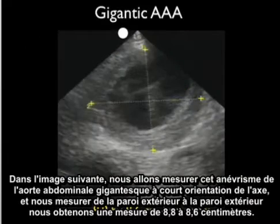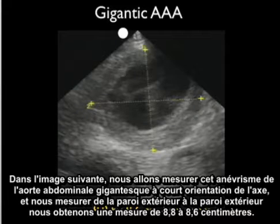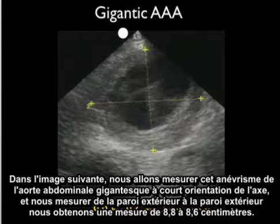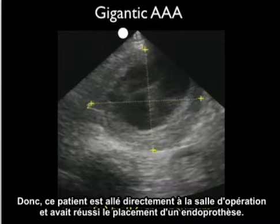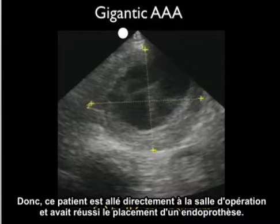In the next image we're going to measure this gigantic abdominal aortic aneurysm in the short axis orientation, measuring from outer wall to outer wall. We get a measurement of 8.8 by 8.6 centimeters. This patient went directly to the operating room and had successful placement of a stent.